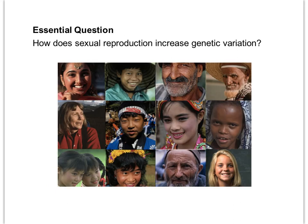In this last section, we're going to talk about how sexual reproduction increases genetic variation. It helps to first understand asexual reproduction and how it doesn't increase genetic variation. Asexual reproduction involves just one parent essentially making copies of itself. Having identical offspring is not advantageous because if something can kill one organism, it can probably kill all of them. Having genetic variation actually ensures our survival as a species.